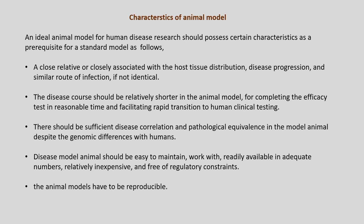Second, the disease course should be relatively shorter in the animal model for completing efficacy tests in reasonable time and facilitating rapid transition to human clinical testing. There should be sufficient disease correlation and pathological equivalence in the model animal despite genomic differences with humans. The disease model animal should be easy to maintain and work with, readily available in adequate numbers for statistical designs, relatively inexpensive, and free of regulatory constraints to the maximum extent possible. Most importantly, animal models have to be reproducible.